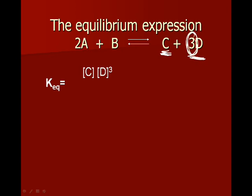The coefficient for D is 3, so here you see it raised to the third power, divided by the concentration of the reactants raised to the power of their coefficients. Here we have a coefficient of 2 for A, so you see A raised to the second power. And B has a 1 in front of it, so it's raised to the first power. That is the equilibrium expression.